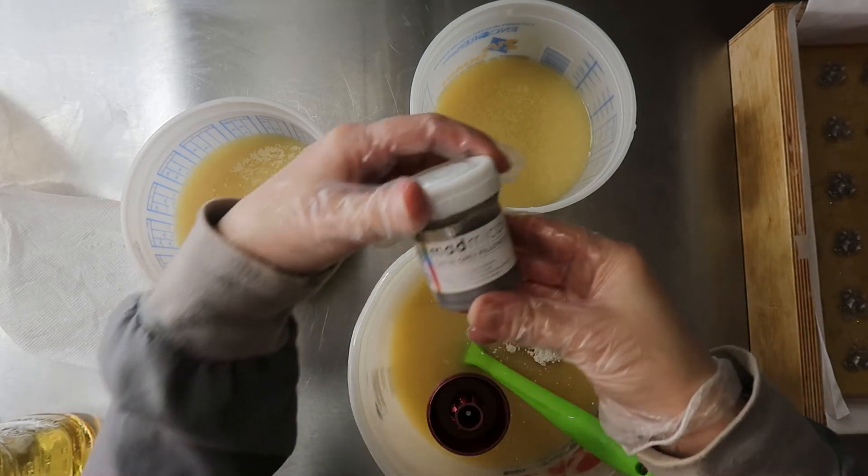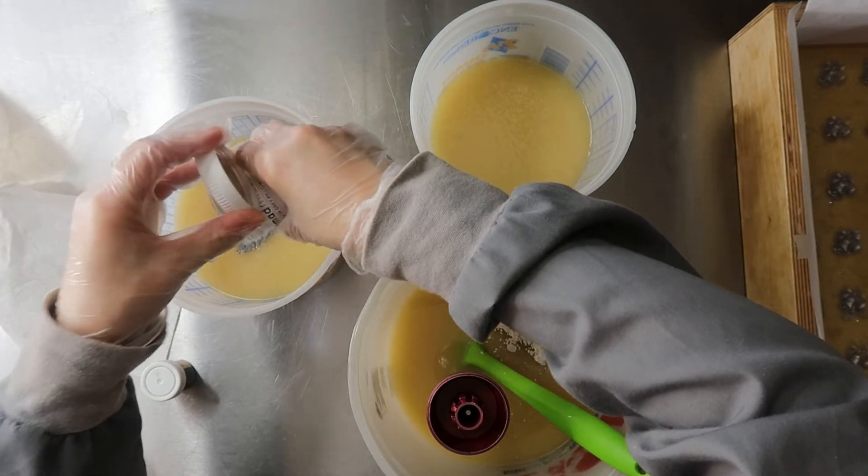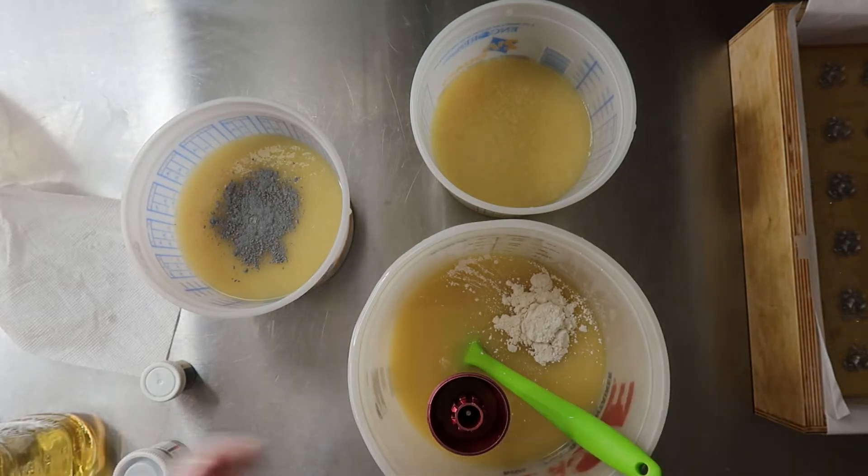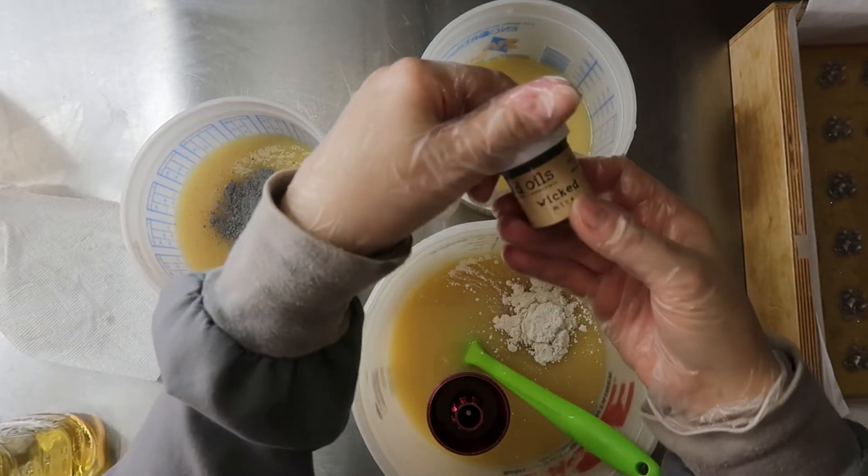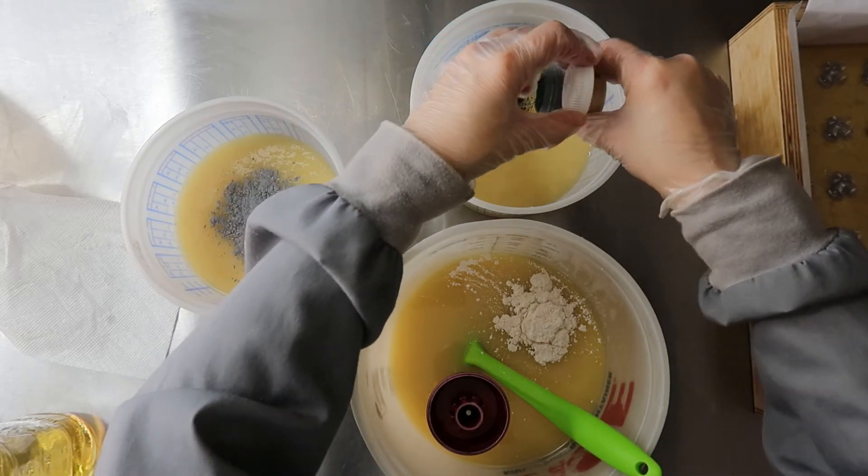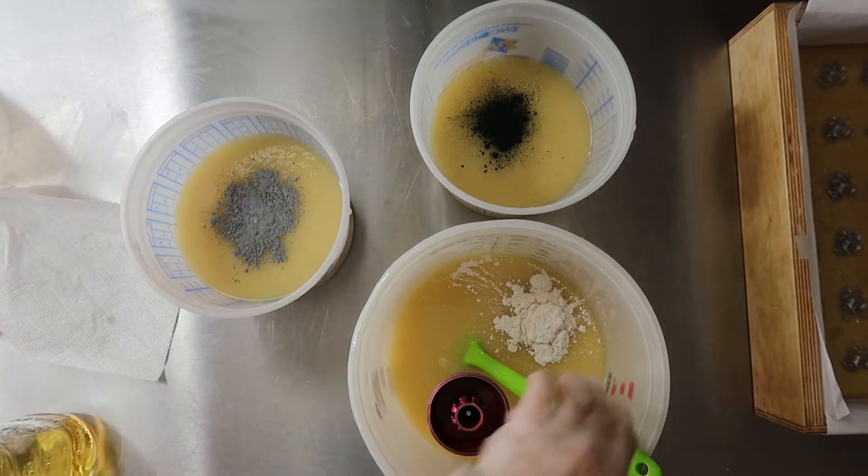Okay and then we're going to do the satin gray pillowcase. We're going to do a bunch of that too. I can add more, I don't want it too too dark. And then a little bit of Wicked. That'll just be a little hint. All right let's get these mixed up.